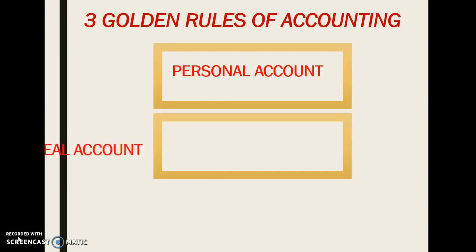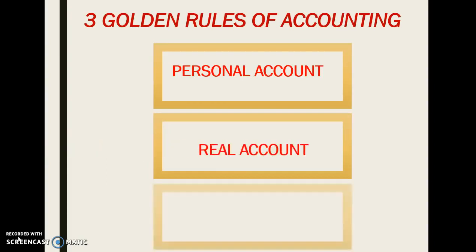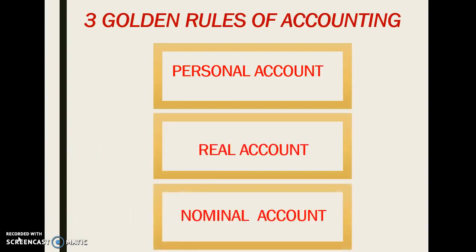Three golden rules of accounting is a most commonly used term and phrase in the field of accounting and finance. These three golden rules are applicable with three types of accounts — personal account, real account, and nominal account.